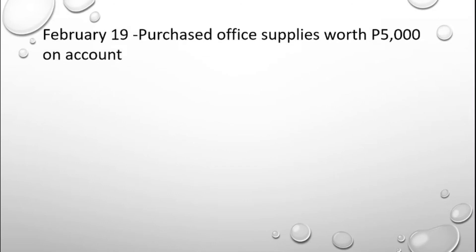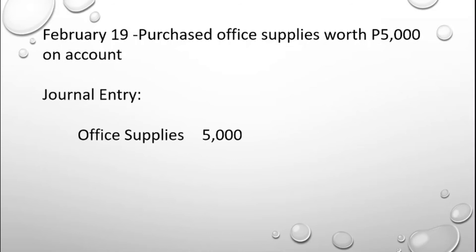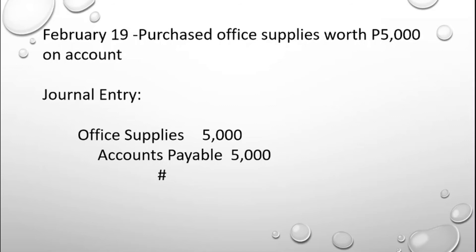Also on February 19, the business purchased office supplies worth ₱5,000 on account. This means the purchase of office supplies was on credit — it is owed/unpaid. The journal entry is: debit Office Supplies ₱5,000 and credit Accounts Payable ₱5,000, since the transaction specifies it is on account.